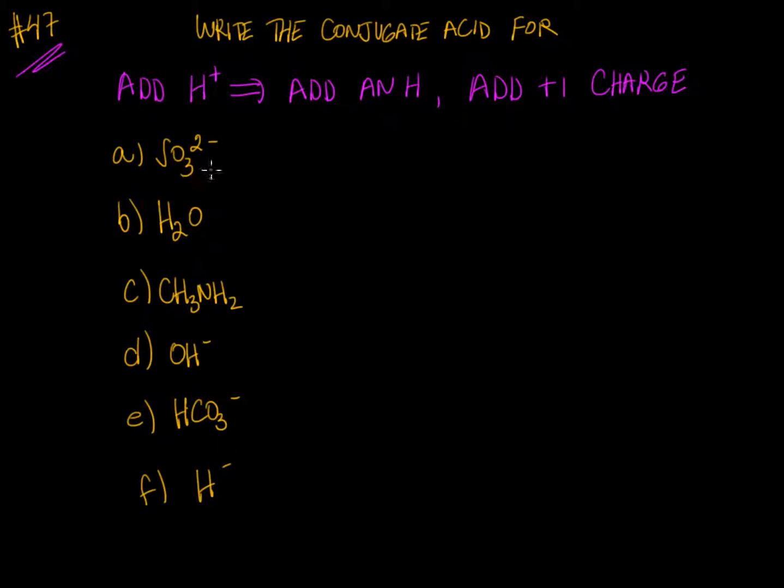Here we have SO3^2-. We add an H to the formula, so we get HSO3. We start out with a -2 charge. We add a +1 charge, so -2 plus 1 is -1. So we write a minus here for this polyatomic ion.